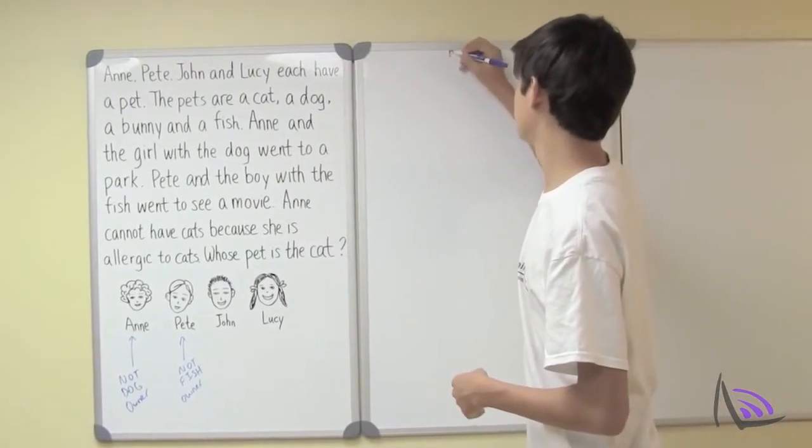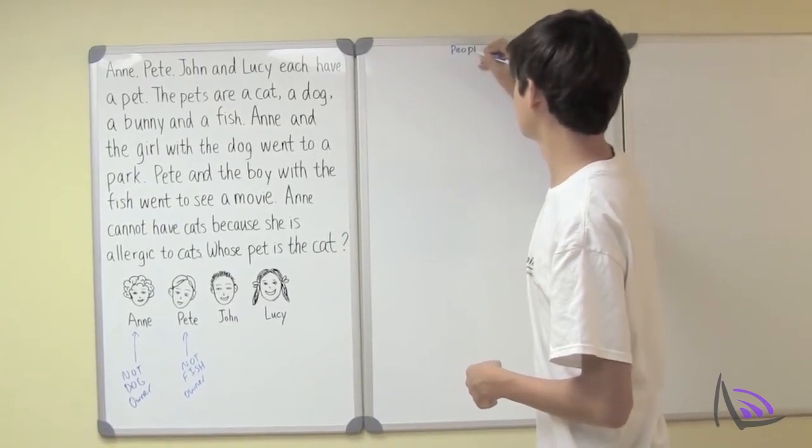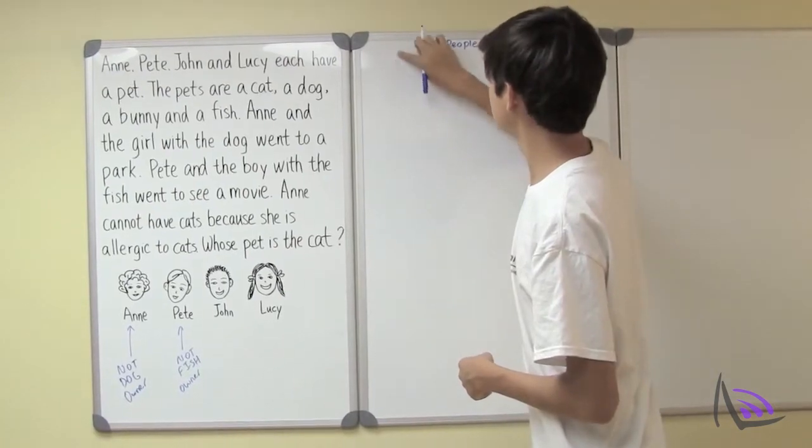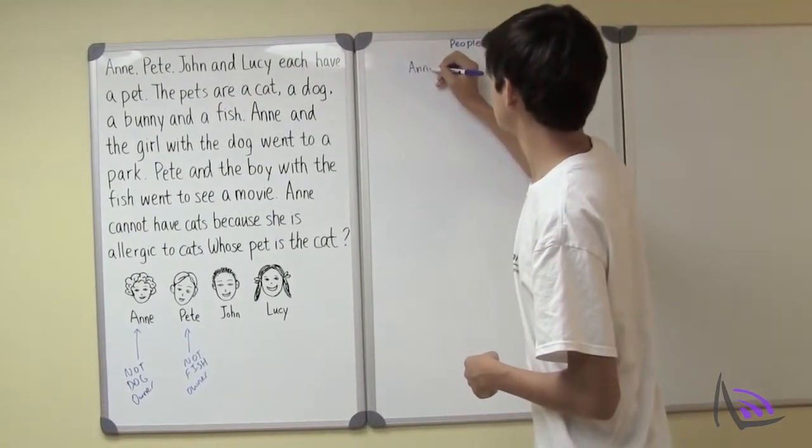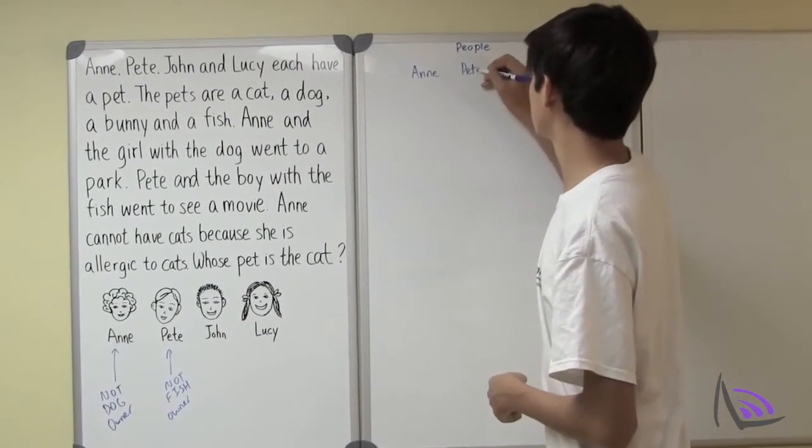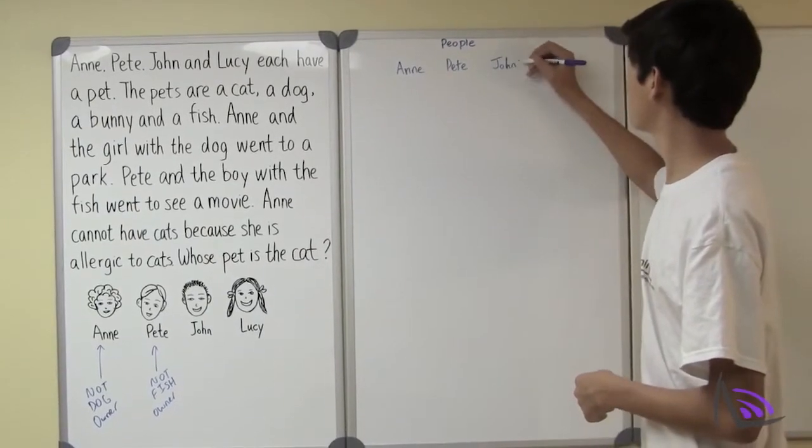First, let's list out the people. We have Ann, Pete, John, and Lucy.